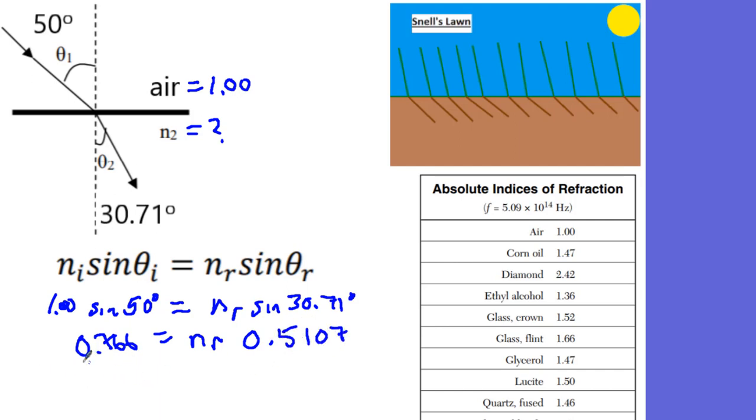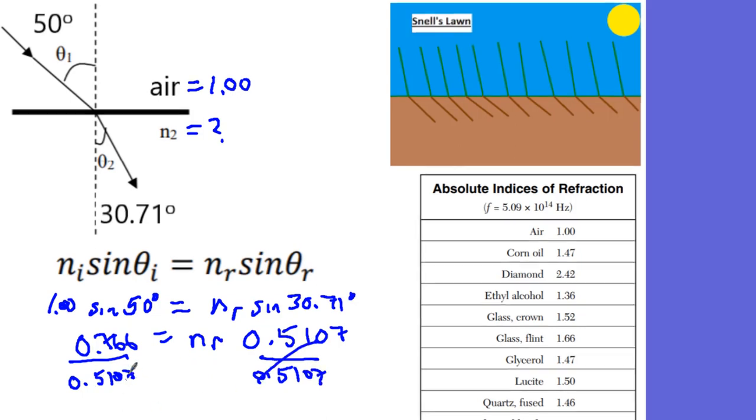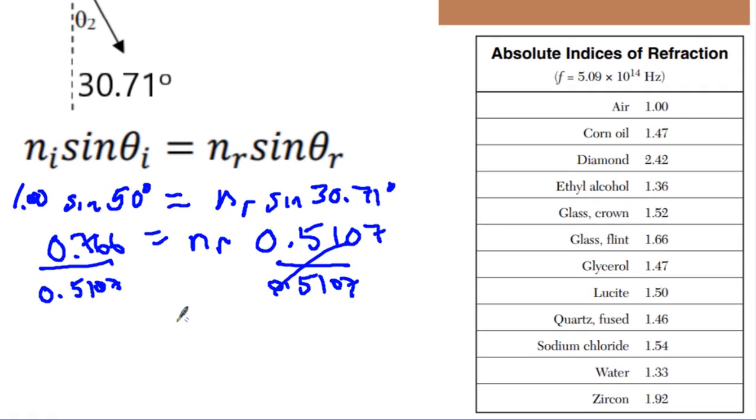And you're going to divide, divide that .5107 on both sides here, .5107, that cancels out over here. And my NR, my index of refraction is going to be 1.50.